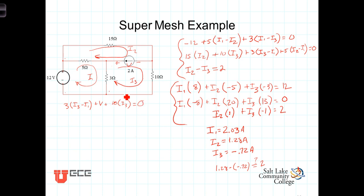Now, we plug in our values for I1, I2, and I3, and we have 3 times I3. So, 3 times I3, well, I3 is a negative 0.72 amps, negative 0.72.